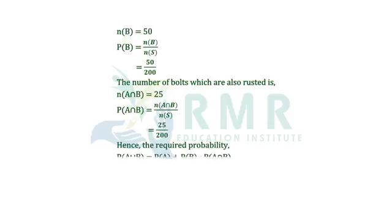Hence, the required probability is probability of A union B equals probability of A plus probability of B minus probability of A intersection B, that is 100 by 200 plus 50 by 200 minus 25 by 200. After simplifying, we are getting 5 by 8.